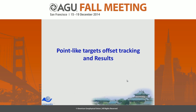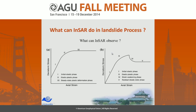But why do we introduce the point-like target offset tracking method? Using the InSAR method, we can detect slow change in movement — phase 1, phase 2, phase 3. But if there is a faster movement, differential InSAR is difficult to capture that movement.